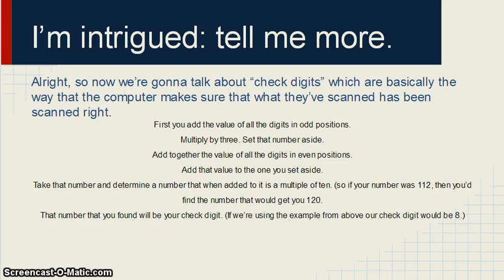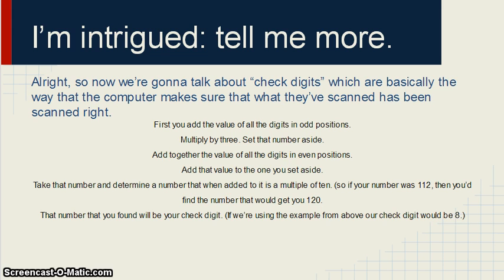You add together the values of the even positions — two, four, six, eight, ten, and twelve — multiply that by three, and add it to the number you just set aside. Then you take that final number after adding them together and determine the number that, when added to it, gives you a multiple of ten. So if you added your two multiples together and got one hundred twelve, then you'd want to find a number that gets you to one hundred twenty. That number would be your check digit.